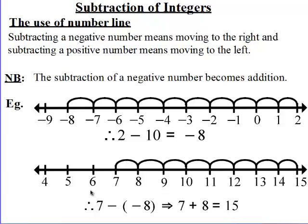The next example, we have 7 minus negative 8. So this is a subtraction of a negative number. Then we said subtraction of a negative number becomes addition. So this is what we meant by that. It becomes 7 plus 8, which is equal to 15.